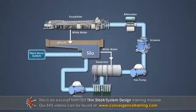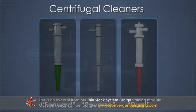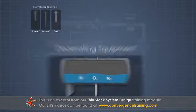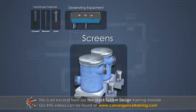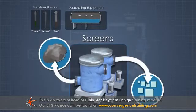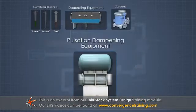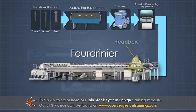The thin stock system can include one or more of these process steps, arranged roughly in this order: centrifugal cleaners to remove small dense contaminants from the stock; deaerating equipment to remove air from the thin stock; screens to remove contaminants that are larger than pulp fibers; and pulsation dampening equipment to remove any pressure pulsations in the stock flow to the head box.